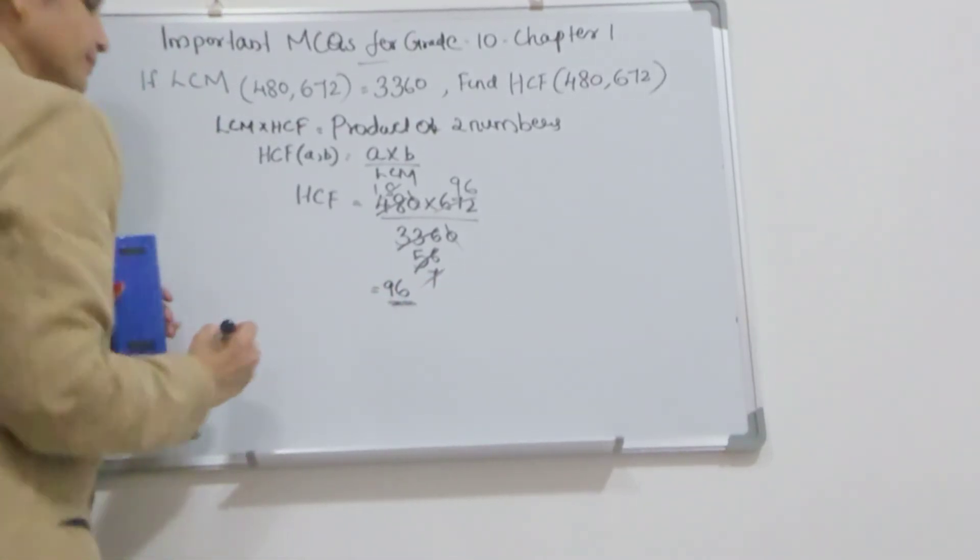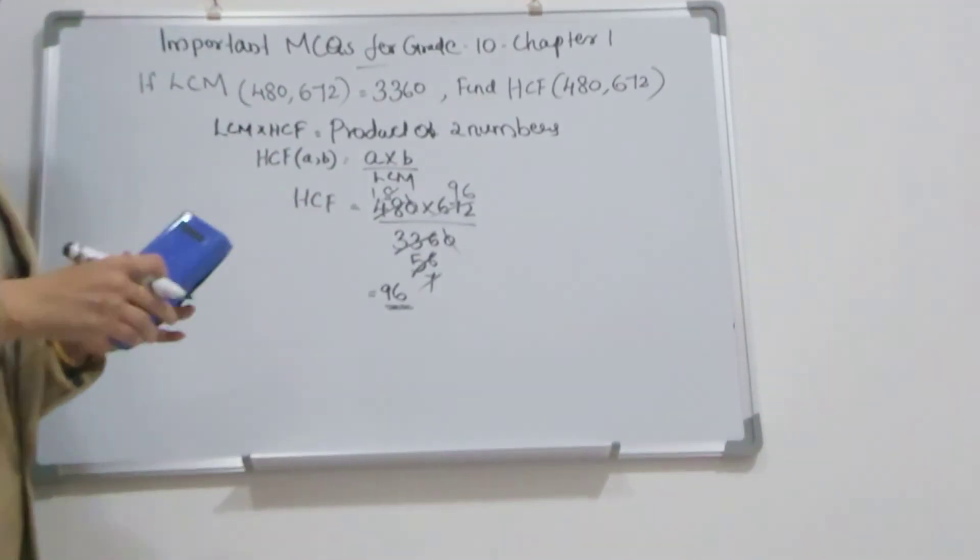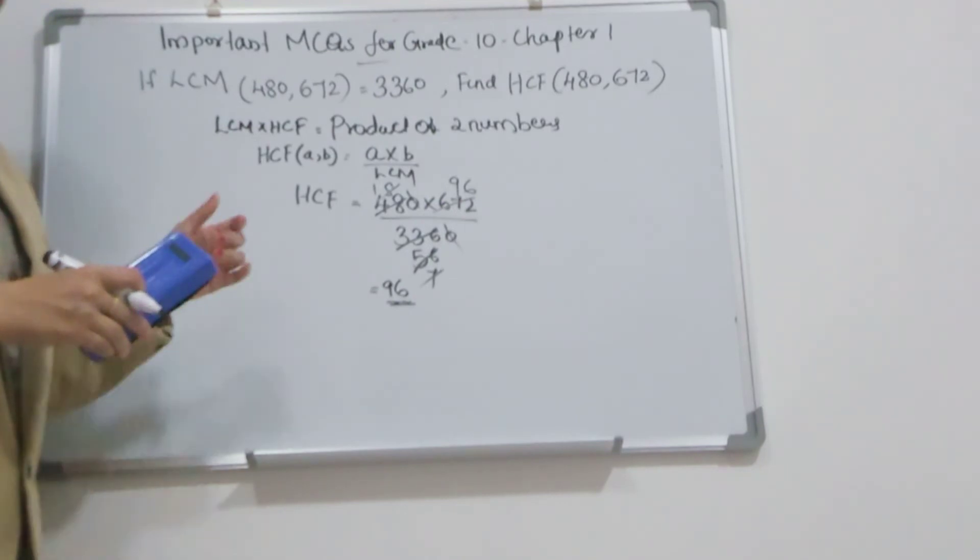So HCF of 480 and 672 is 96. Okay, I will explain in Malayalam.